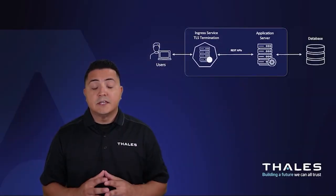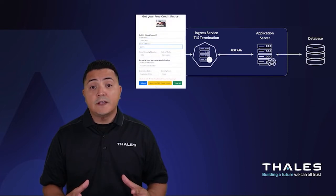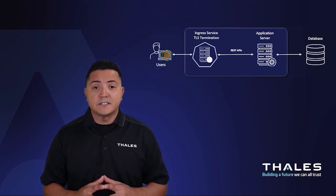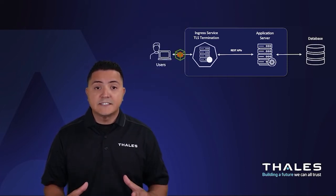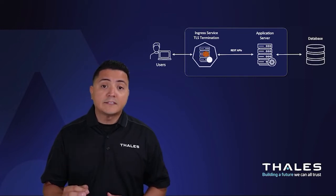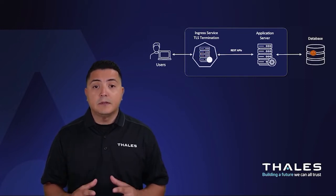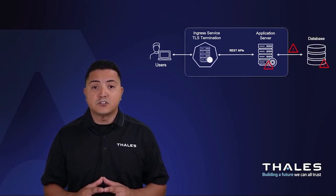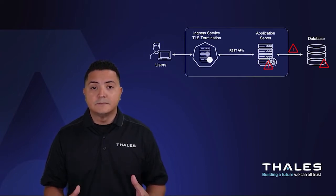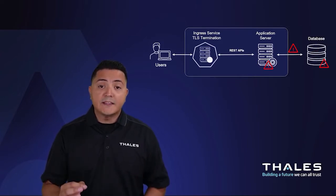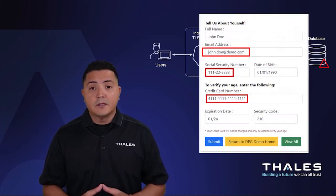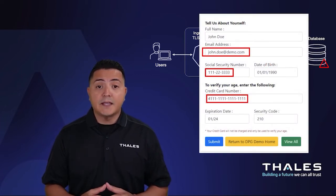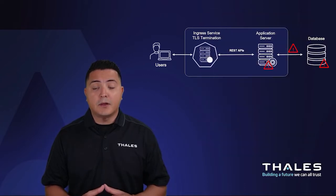I have this web application that is external facing, collecting and storing consumer personal identifiable information in JSON format. While at rest, the data is stored unencrypted in plain text, putting us at a high risk of our consumer information being exposed. To mitigate this risk, we need to be able to encrypt or tokenize specific fields that are tagged as PII based on our internal company policy.